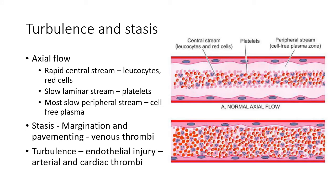The next factor is alteration in blood flow. The normal flow of blood is called axial flow. In axial flow, the central stream is the fastest and the peripheral stream is the slowest. The rapid central stream carries leukocytes and red cells; the intermediate laminar stream carries platelets; and the slowest peripheral stream carries cell-free plasma.